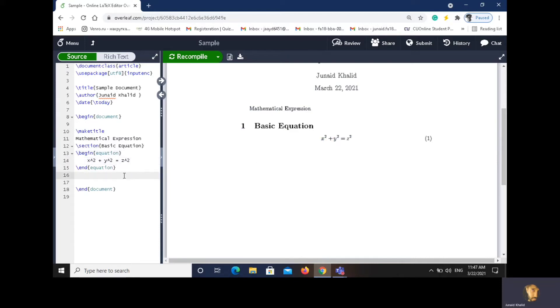Let's take another example. In physics, the mass-energy equivalence is described by the equation begin equation: E equals to mc power square, and compile. Control enter. E is equal to mc squared.